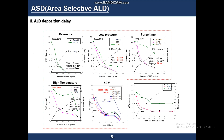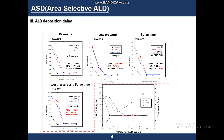However, every process condition controlled could not completely block deposition as desired. So I tried another method. In this study, I changed the SAM material, as SAM stands for self-assembled monolayer.